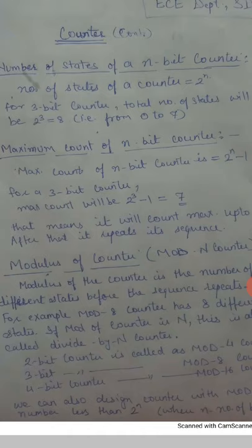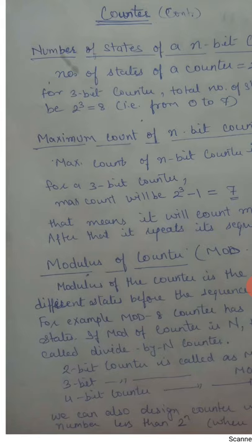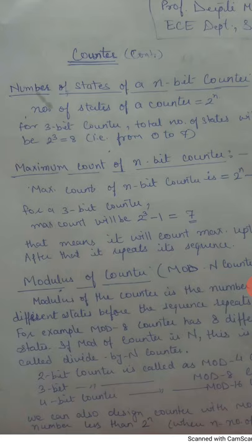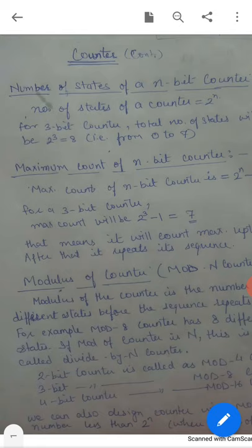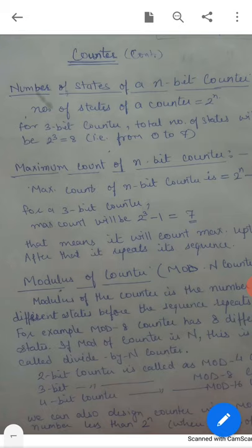Next is the modulus of a counter. The modulus of a counter is the number of different states before the sequence repeats. For example, a 2-bit counter can also be called a mod-4 counter. Similarly, a 3-bit counter — since 2 to the power 3 is 8 — can be called a mod-8 counter. A 4-bit up or down counter is called a mod-16 counter.